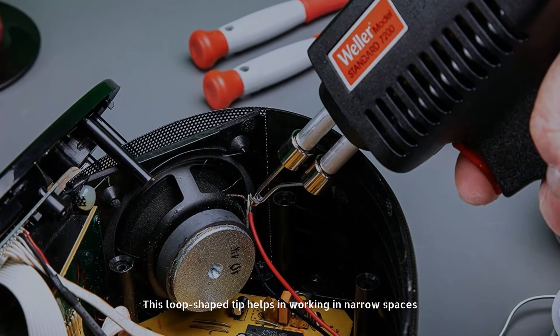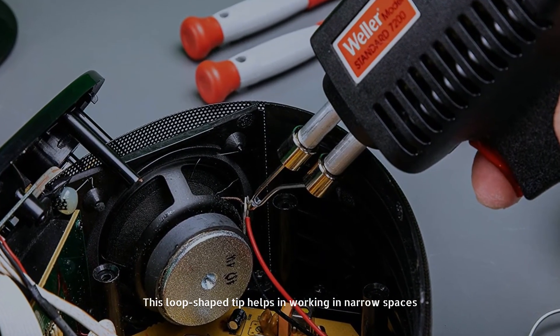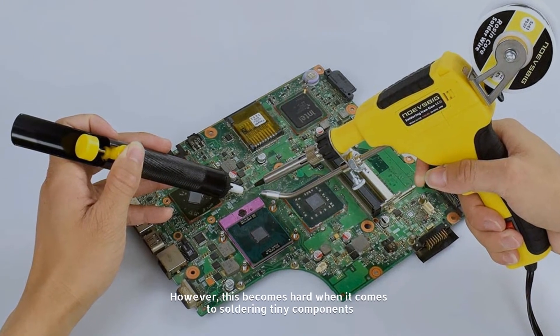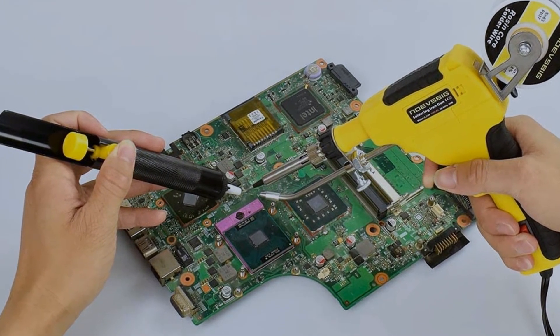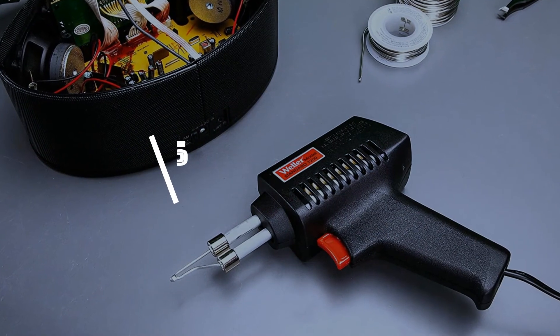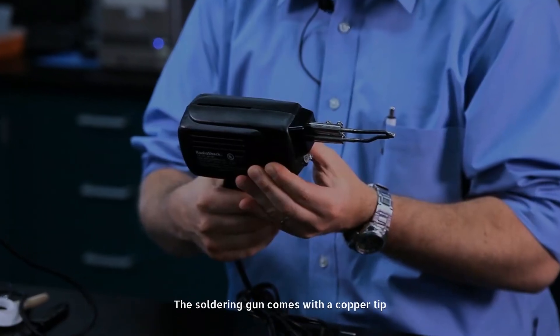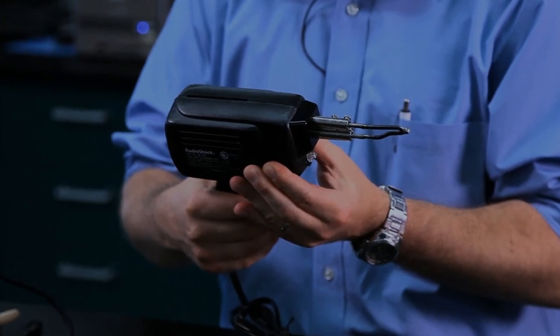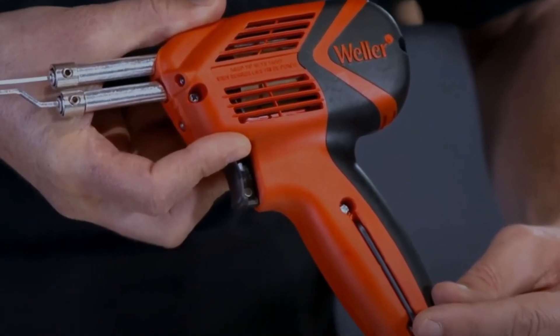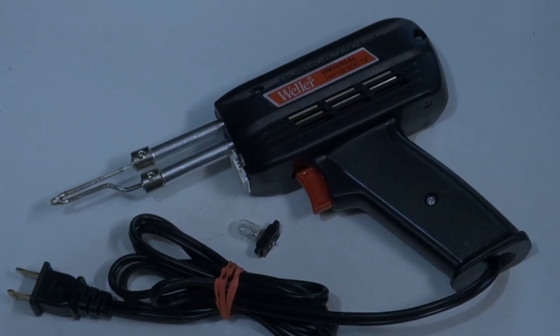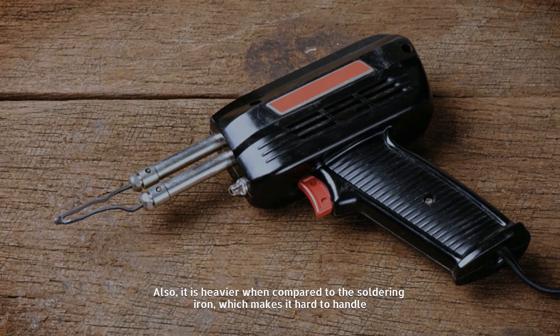However, this becomes hard when it comes to soldering tiny components. Number six: Disadvantages. The soldering gun comes with a copper tip, and this tip slowly dissolves after use, so you have to replace the copper tip quite frequently.